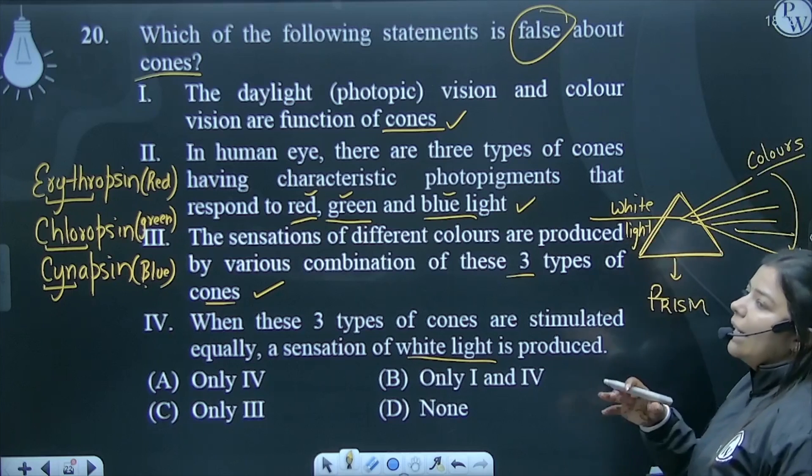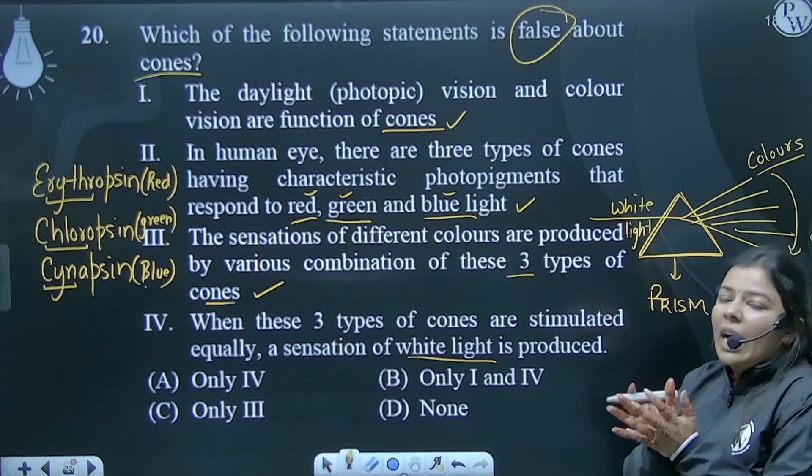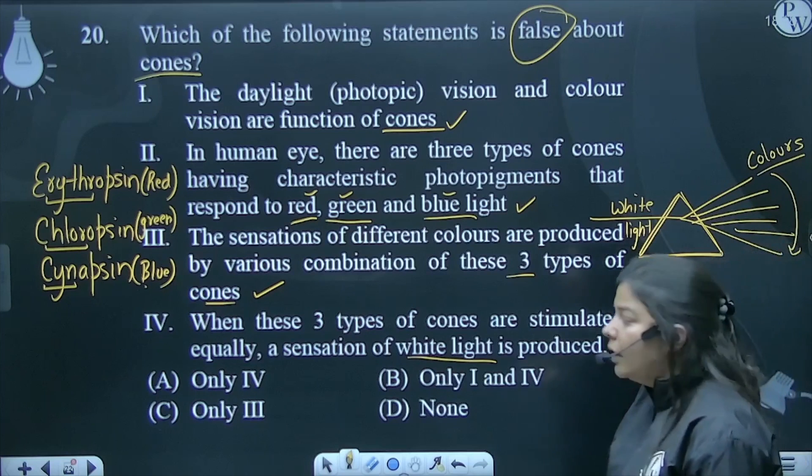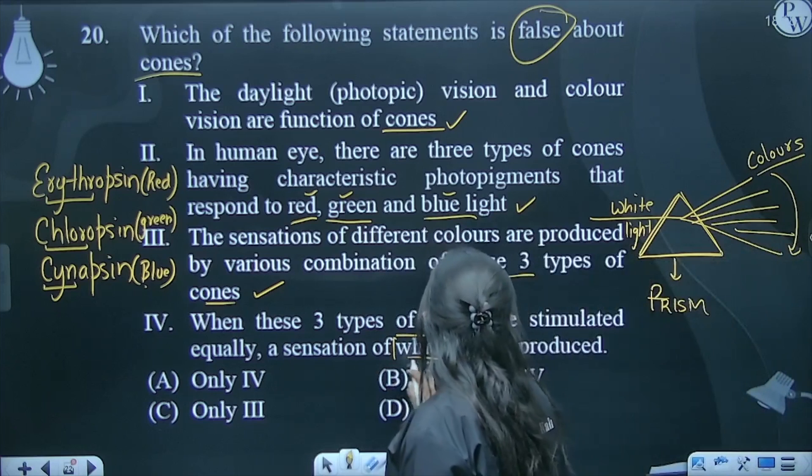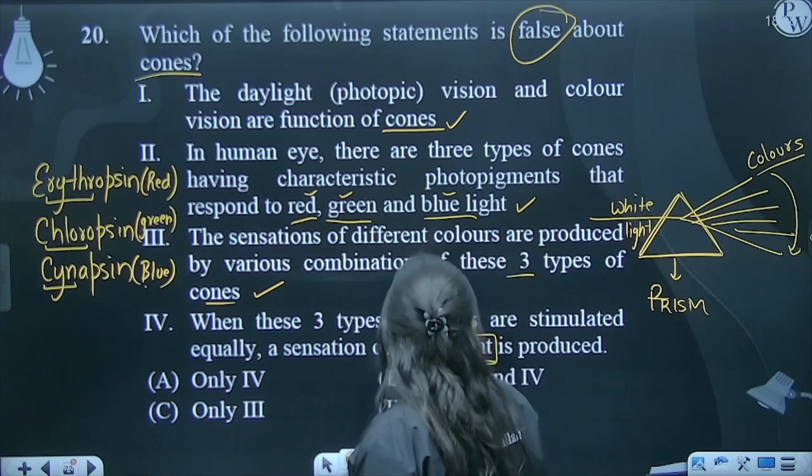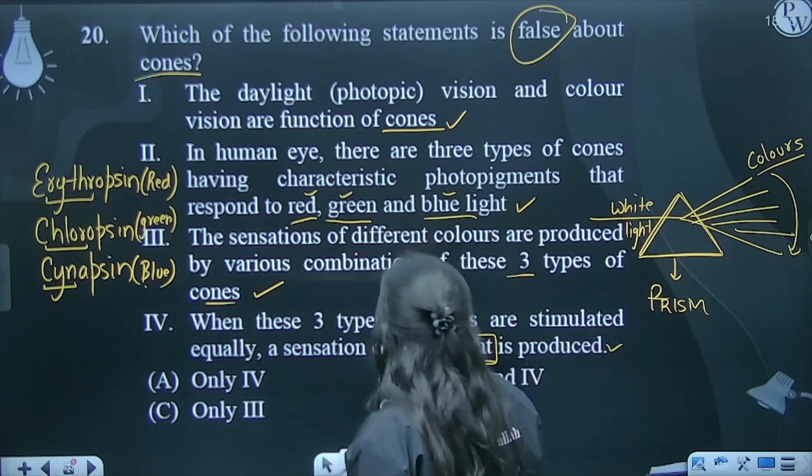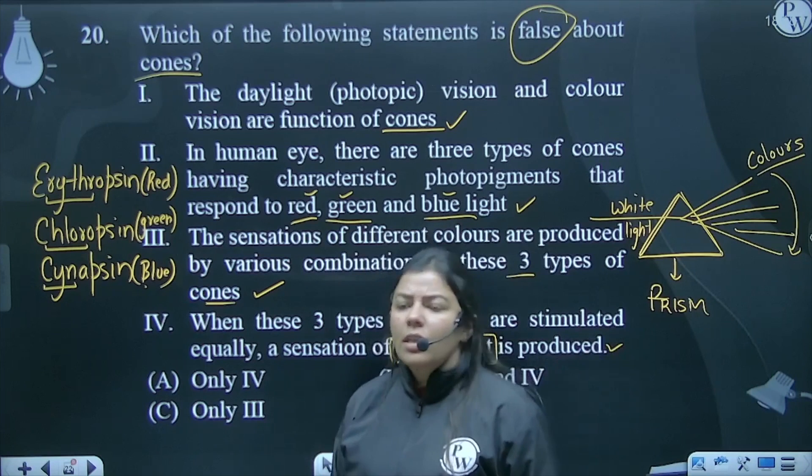Basically, white light contains all the colors. What do we call white? Basically, all the colors are present, and black color basically absorbs all the colors.